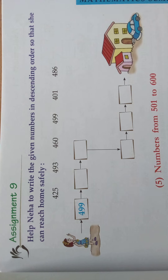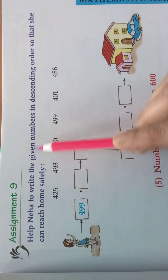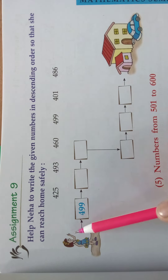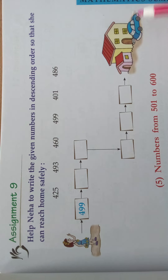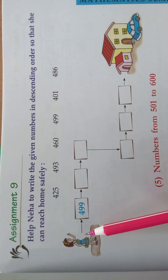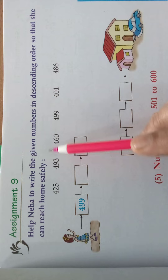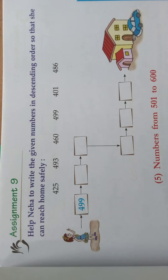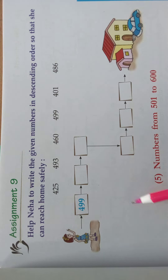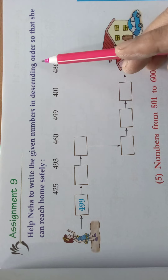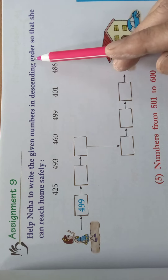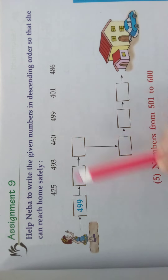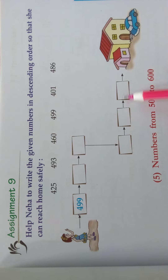Now we will see assignment 9. We will read the question first: help Neha to write the given numbers in descending order so that she can reach home safely. See here, her house is here, and the steps are there. She should write the numbers in descending order to reach home safely — otherwise she can't. Descending order means from big number to small number. Come, we will see — 499 is there, and we should find the next big number.